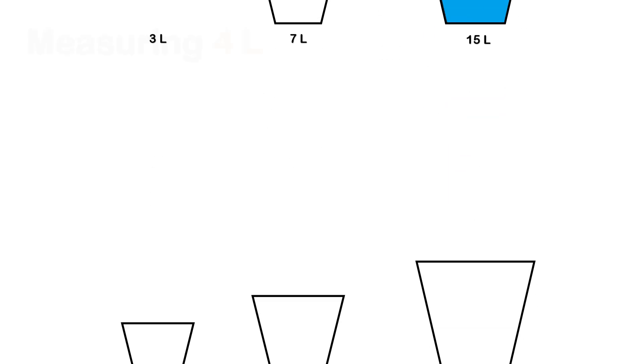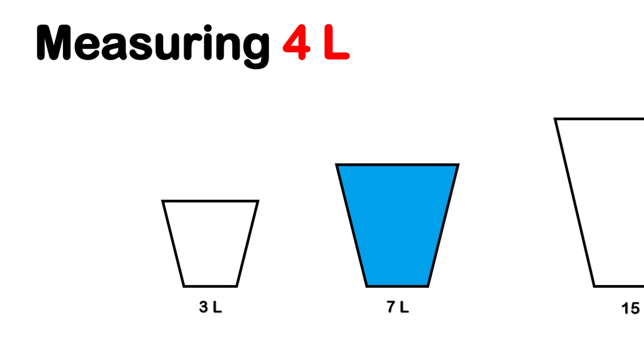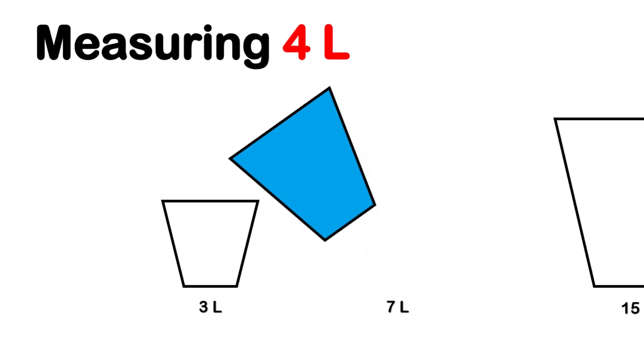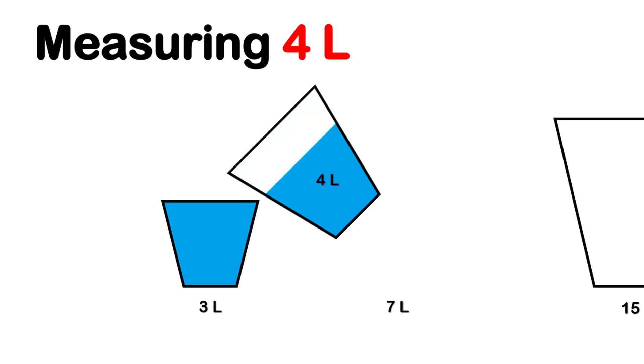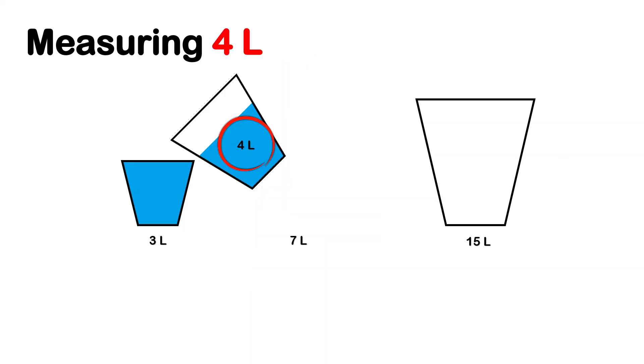Measuring 4 liters. Fill the 7-liter bucket. Now pour from it into the 3-liter bucket. Once the small bucket is full, you're left with exactly 4 liters in the 7-liter bucket. That's it. 4 liters measured. Nice and easy.